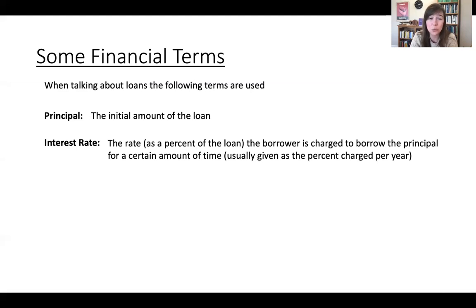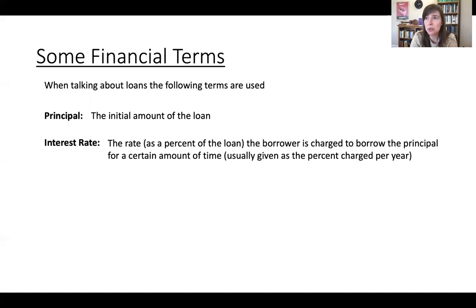Then there's the interest rate, which is the rate written as a percent of the loan — usually an annual percent — that the borrower is charged to borrow the principal for a given amount of time. For example, recording this in March 2021, mortgage interest rates are hovering around 2.5%, meaning if you take out a loan to buy a house, the bank will charge you 2.5% per year to hold onto that money.